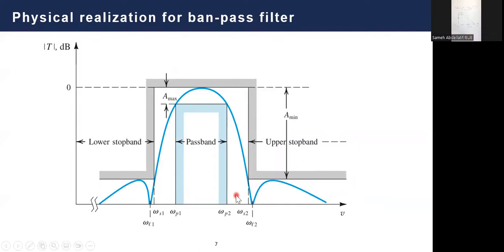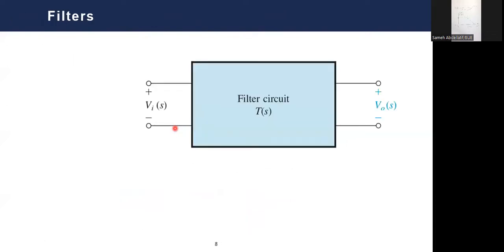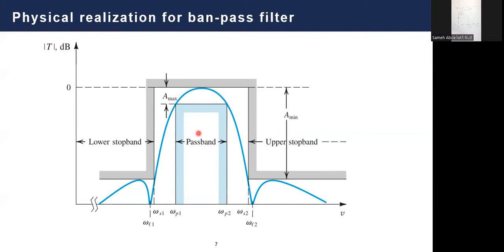A band-pass filter also doesn't look as ideal — you still have zeros and ripples in the pass and stop bands. Now to consider a physical filter, we look at the transfer characteristics. The graphs in the frequency domain or omega domain represent the graphical representation of these transfer characteristics. The key point is to have the transfer function, which is V_out(jω)/V_in(jω), expressed as a fractional function in S or jω, written as a factorization of roots.